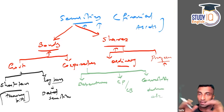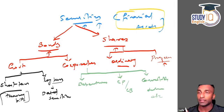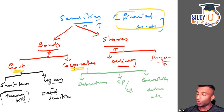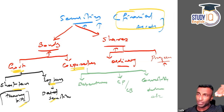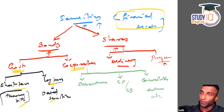So to summarize the structure: securities are financial assets, mainly bonds and shares. Bonds include government bonds — short-term treasury bills and long-term dated securities — and corporate bonds: debentures, convertible debentures, commercial paper, commercial bill, etc. Shares include the ordinary equity share and preference shares.